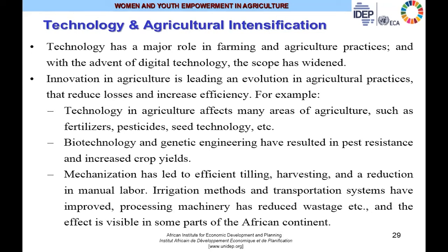Technology has a major role in farming and agricultural practices, and with the advent of GIS and digital technology in particular, the scope has been widened. Innovation in agriculture is already leading an evolution in agricultural practices which reduce losses and increase efficiency. Technology affects many areas such as fertilizers, pesticides, and seed technology. Biotechnology and genetic engineering have resulted in pest resistance and increased crop yields. Mechanization has led to efficient tilling, harvesting, and reduction in manual labor. Irrigation methods, transportation systems, and processing machinery have improved and reduced wastage.